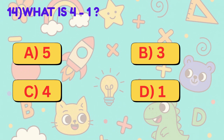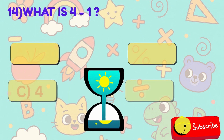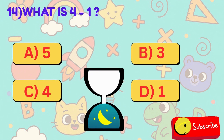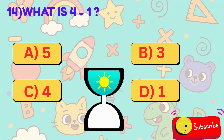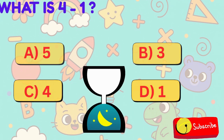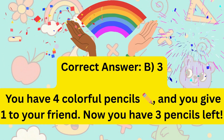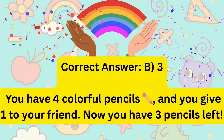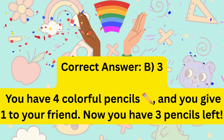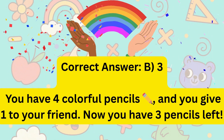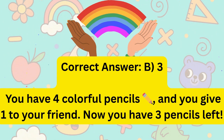14. What is 4 minus 1? Is it A, 5, B, 3, C, 4, or D, 1? Correct answer is B, 3. You have 4 colorful pencils and you give 1 to your friend. Now you have 3 pencils left.